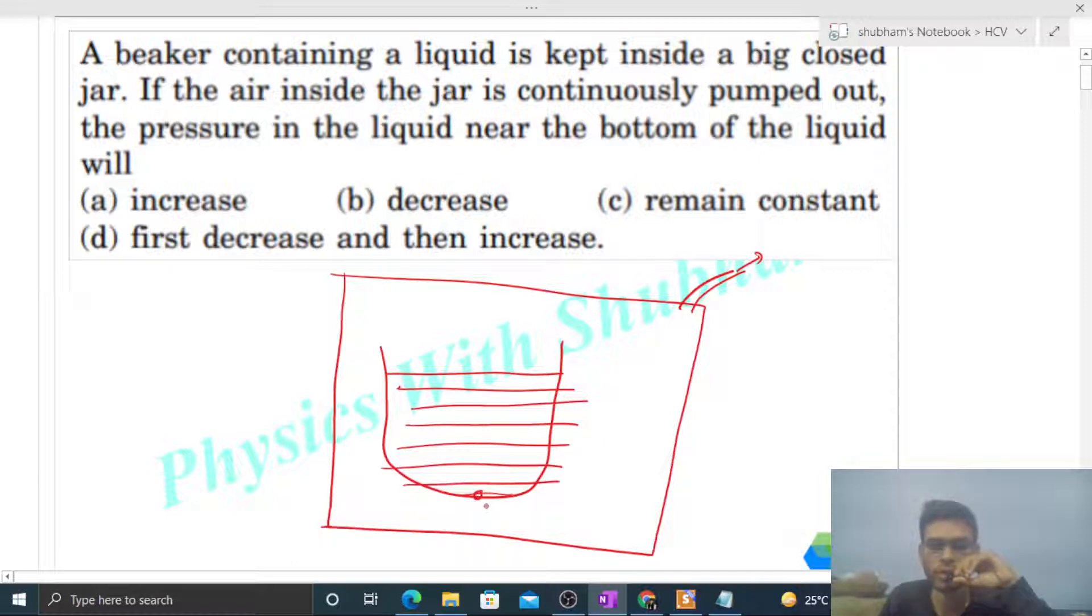Then is beaker ke bottom pe ek point hoga, let's say point A. So we have to find out ki point A pe jo pressure hoga, waha pe kya hoga. So aap dekho, jab hum is jar mein se air ko pump out karenge, then pressure kam hoga is jar ke andar.